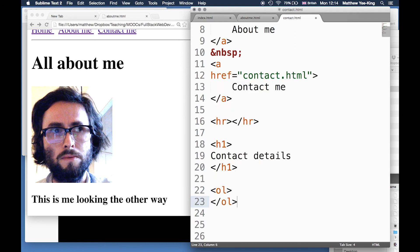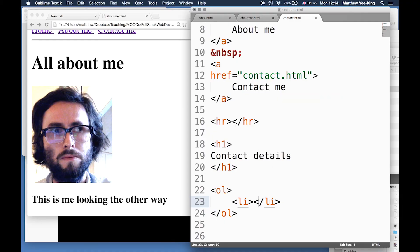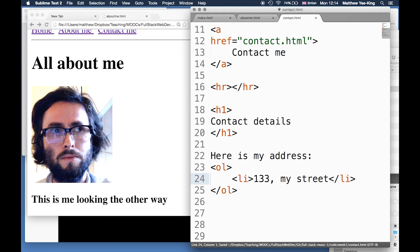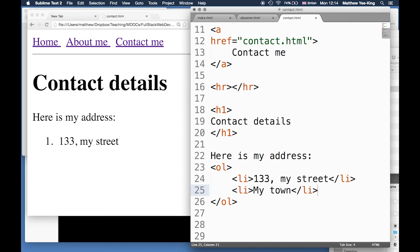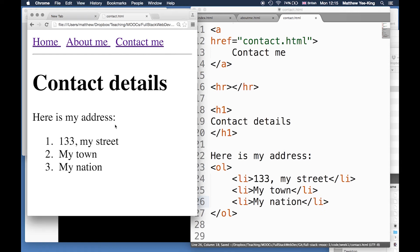There's different ways of creating lists. You've got ordered list - ol. We use that concept of one tag being inside another tag. So 'one three three my street,' 'here is my address.' Save that and go to the contact page. You can see it's put a one. If I put another thing there - 'my town' - and I can add another one - 'my nation.' We've created a list and the browser has automatically done some stuff for me. It's automatically selected the font and indented this list slightly, and it's automatically created one, two, three.